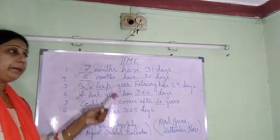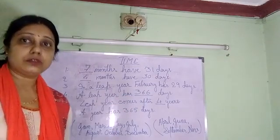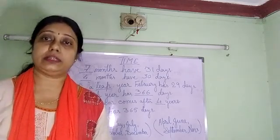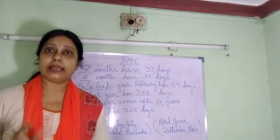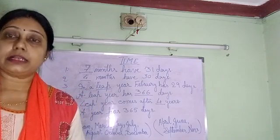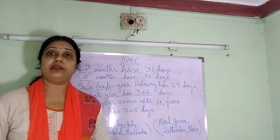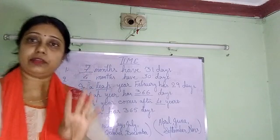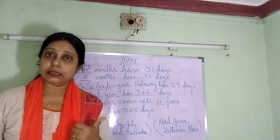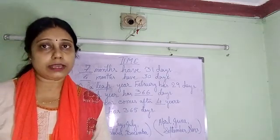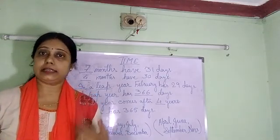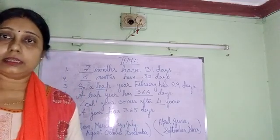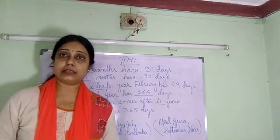In a leap year, February has 29 days. What is a leap year? Every common year has 365 days, but a leap year has 366 days. A leap year comes after every 4 years. In that year, February has 29 days. In a normal year, February has 28 days. So in a leap year, February has 29 days and there are 366 days in total.